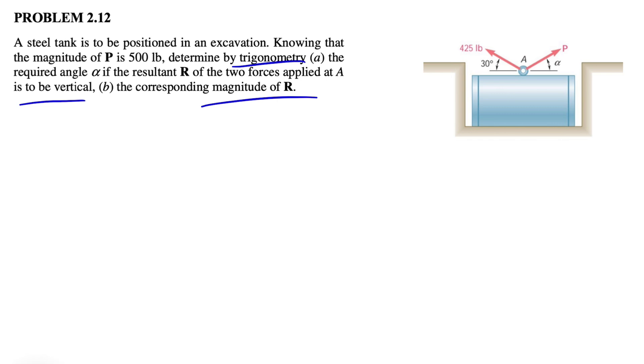So we're going to use the triangle rule. We basically have the force of 425 pounds, which makes 30 degrees with horizontal. We have the force P, which makes angle alpha.